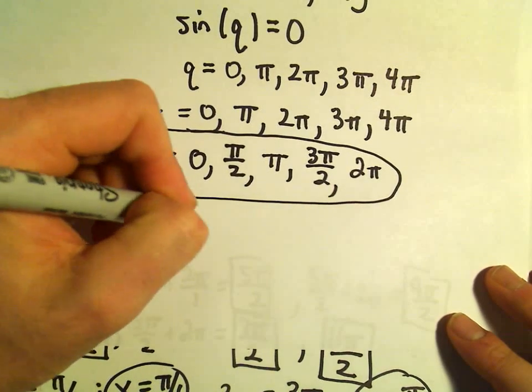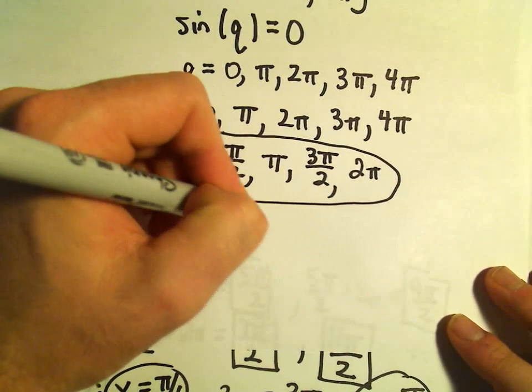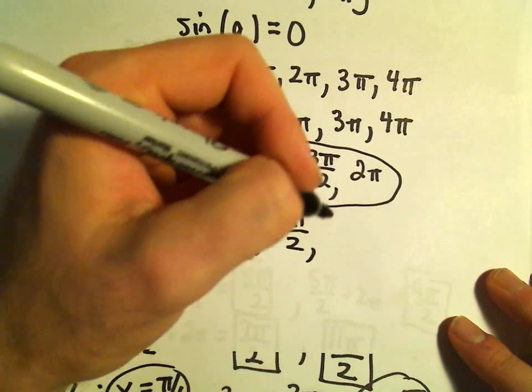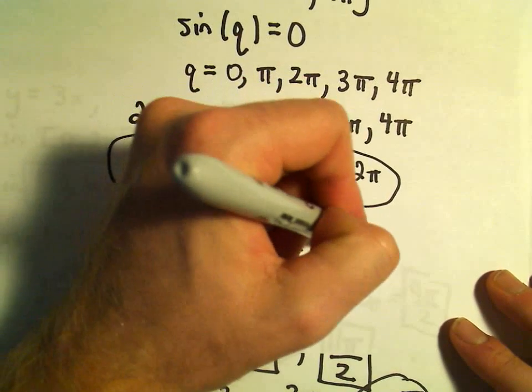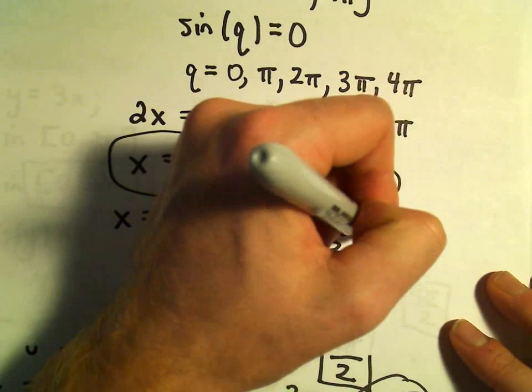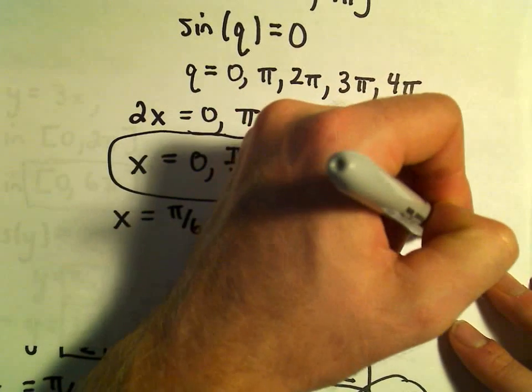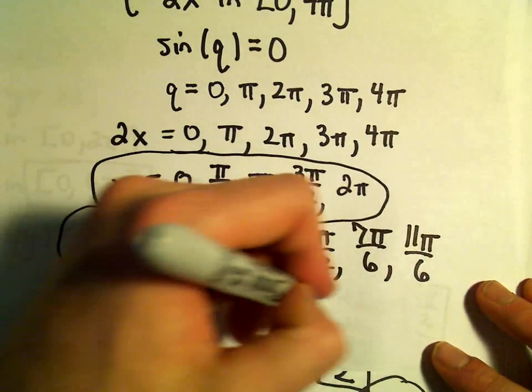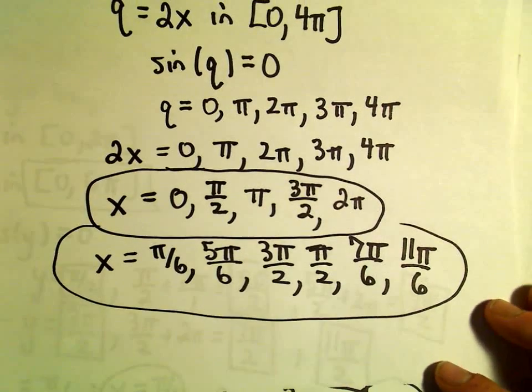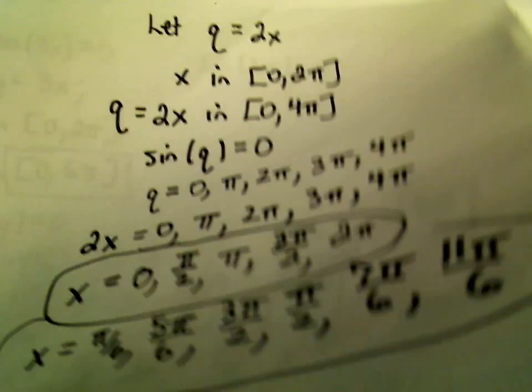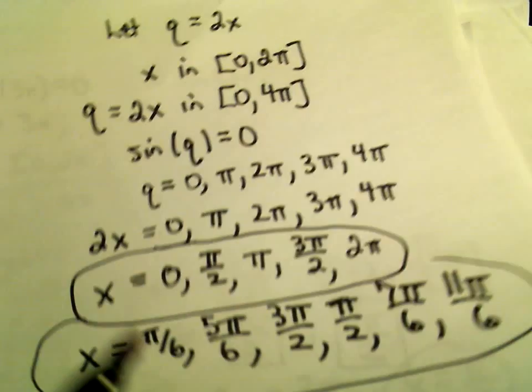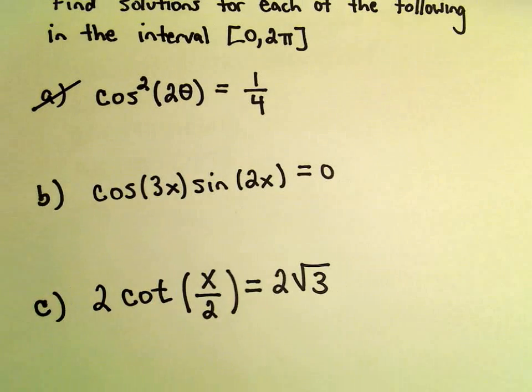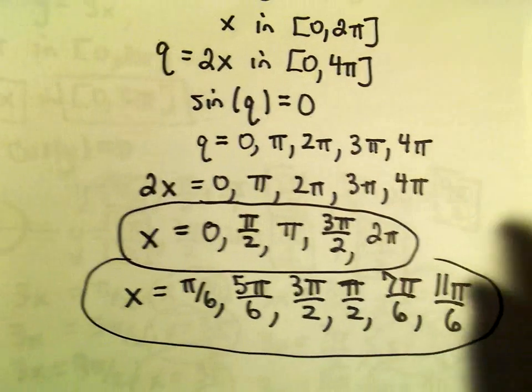And we said that was x equals π/6, 5π/6, 3π/2, π/2, 7π/6, and also 11π/6. So these would be actually all of our solutions to this original equation, cosine of 3x times sine of 2x equals 0.